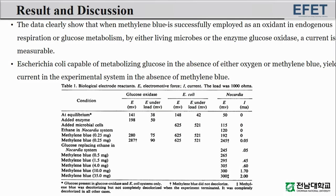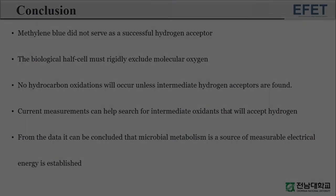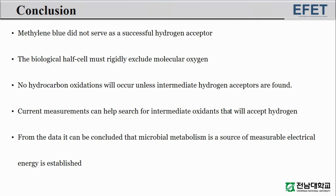The data clearly show that when a substitute hydrogen acceptor for oxygen — namely, methylene blue — is successfully employed as an oxidant in endogenous respiration or glucose metabolism, by either living microbes or the enzyme glucose oxidase, a current is measurable. Escherichia coli, a facultative anaerobe capable of metabolizing glucose in the absence of either oxygen or methylene blue, yielded current in the experimental system. Methylene blue did not serve as a successful hydrogen acceptor in the metabolism of ethane by ethane oxidizers. The biological half cell must rigidly exclude molecular oxygen, and no hydrocarbon oxidations will occur unless intermediate hydrogen acceptors are found. From the data, it can be concluded that microbial metabolism as a source of measurable electrical energy is established.